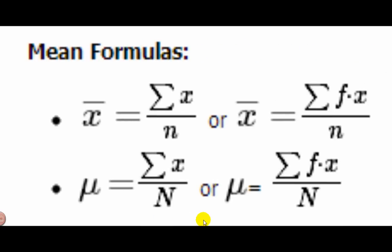Here is the formula for mean. X-bar is simply adding up all the x's and dividing by n. Mu is also adding up all the x's and dividing by n — the formulas don't change except for whether we have a little n (sample size) or a big N (population size).